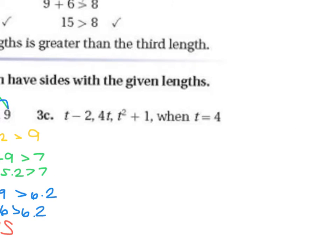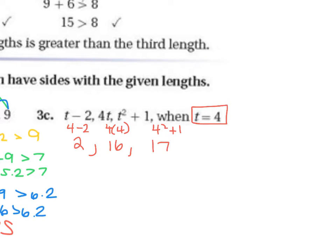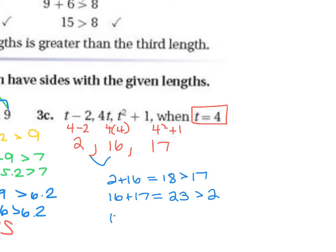Problem 3C uses variables again, with t equals 4. Plugging in: t minus 2 is 2, 4t is 16, and t squared plus 1 is 17. Checking pairs: 2 plus 16 is 18, greater than 17; 16 plus 17 is 33, greater than 2; and 17 plus 2 is 19, greater than 16. So this is also yes, it can form a triangle.